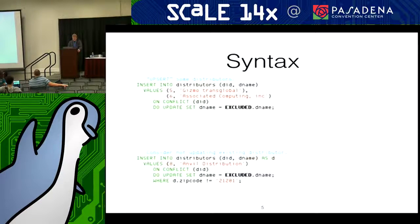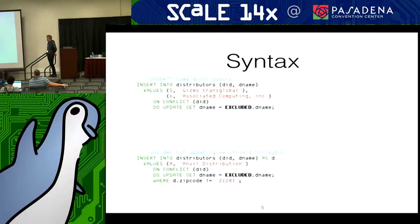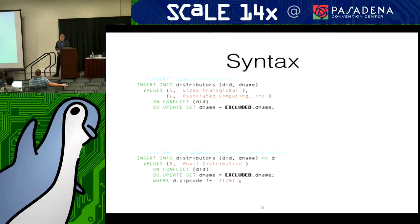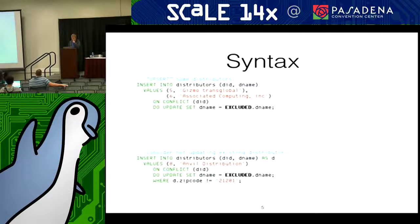I'm highlighting the excluded pseudo-table here. This is a way that we can reference rows originally proposed for insertion. It would be inconvenient — and possibly not even possible — to repeat the values from the insert, because the first one certainly is a multi-row insert. Having the excluded pseudo-table allows us to use it almost like a join on what you originally proposed for insertion. It's just a convenient way of referencing what you have there in the first place without repeating it. And obviously, because this is a multi-row insert statement, it would be rather inconvenient to do it any other way.